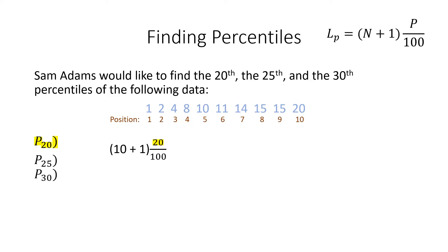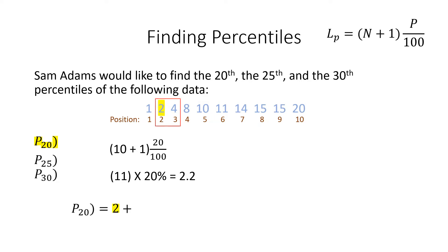For the 20th percentile, we take our n plus 1 and multiply it by the percentile, or 20 over 100. This is the same thing as 11 times 20 percent. You should come up with 2.2. 2.2 is somewhere between the second and third position. We will take our number in the second position, 2.